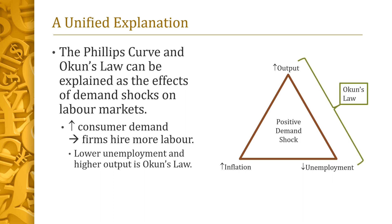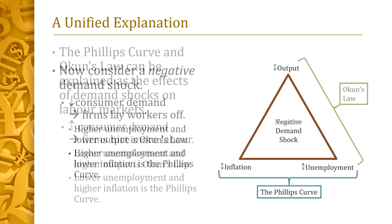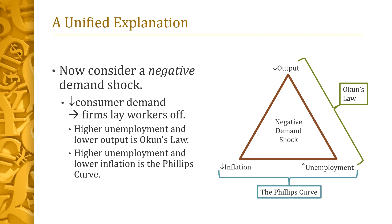When lower unemployment is combined with higher output, we obtain Okun's law. When it is combined with higher inflation, we get the Phillips curve. Now, consider the effects of a negative demand shock. Such a shock leads firms to reduce output by laying workers off. These layoffs lead to higher unemployment and to lower wages. The lower wages, in turn, lead firms to lower their prices. When higher unemployment is combined with lower output, we obtain Okun's law. When it is instead combined with lower inflation, we obtain the Phillips curve.